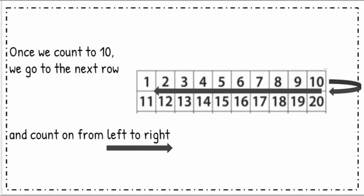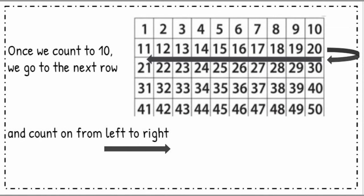Once we get to 10, we can go to the next row. Here's a little more practice. If you've counted on from 10 and gone to the next row: 11, 12, 13, 14, 15, 16, 17, 18, 19, 20 — then again you're going to go down into the next row and start at the very left, counting on to the right: 21, 22, 23, 24, 25, 26, 27, 28, 29, 30. This is a good time to pause and go over that. It also never hurts to practice counting.